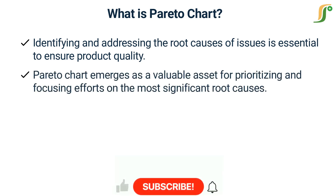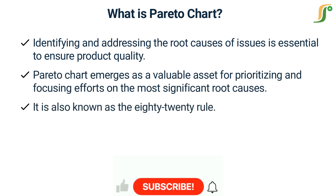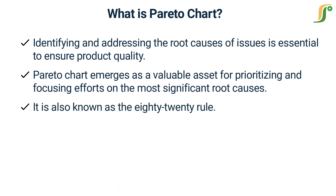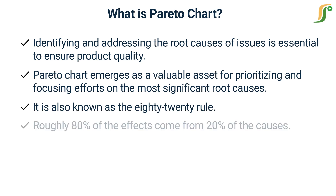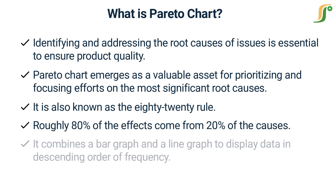Among the various tools available, the Pareto chart emerges as a valuable asset for prioritizing and focusing efforts on the most significant root causes. The Pareto chart, also known as the 80-20 rule, is a visual representation of data that allows us to identify the most significant factors contributing to a problem. It follows the Pareto principle, which states that roughly 80% of the effects come from 20% of the causes. The chart combines a bar graph and a line graph to display data in descending order of frequency, helping to prioritize efforts for maximum impact.